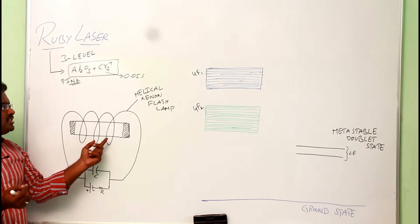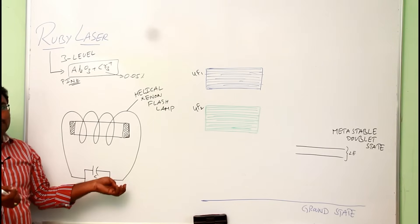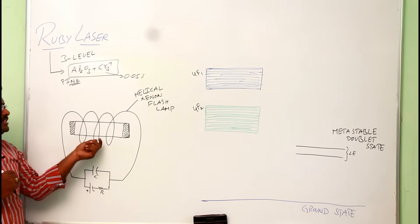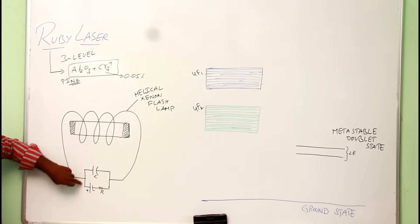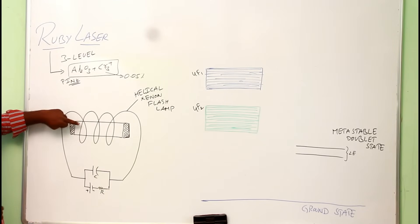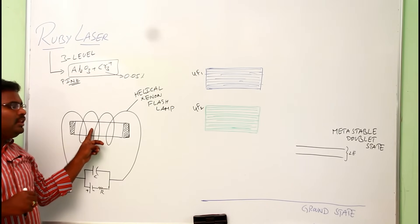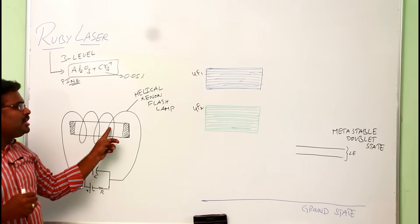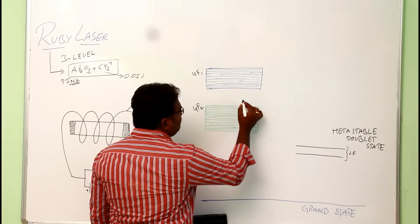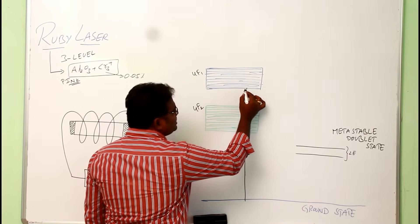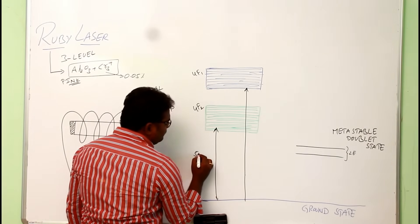For pumping, we are giving light energy, so this is called optical pumping. By applying electrical energy to the helical xenon flash lamp, white light falls on the ruby rod. The chromium atoms absorb the green and blue wavelengths from that white light. By absorbing green and blue wavelengths, the energy levels broaden into bands.